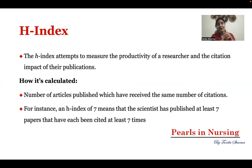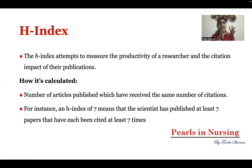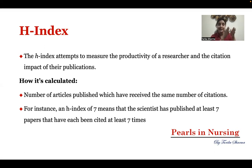The next metric is H-index. While impact factor tells you about the quality of a particular journal, H-index tells about the quality of the author — the researcher's productivity and how many citations a person has. To calculate H-index, you look at the number of articles published by an author that have received the same number of citations. If a person has an H-index of 7, it means they have 7 papers, each cited at least 7 times.